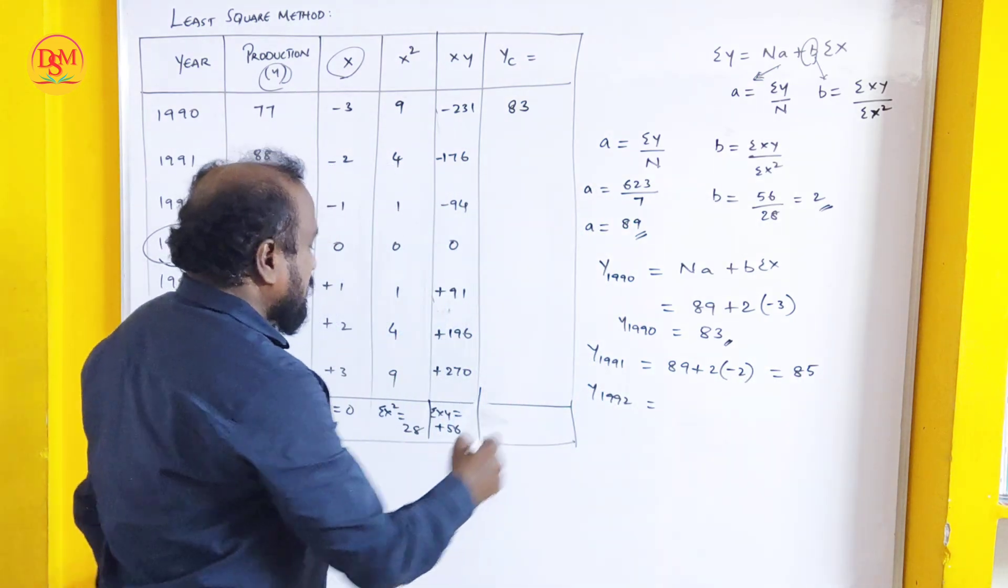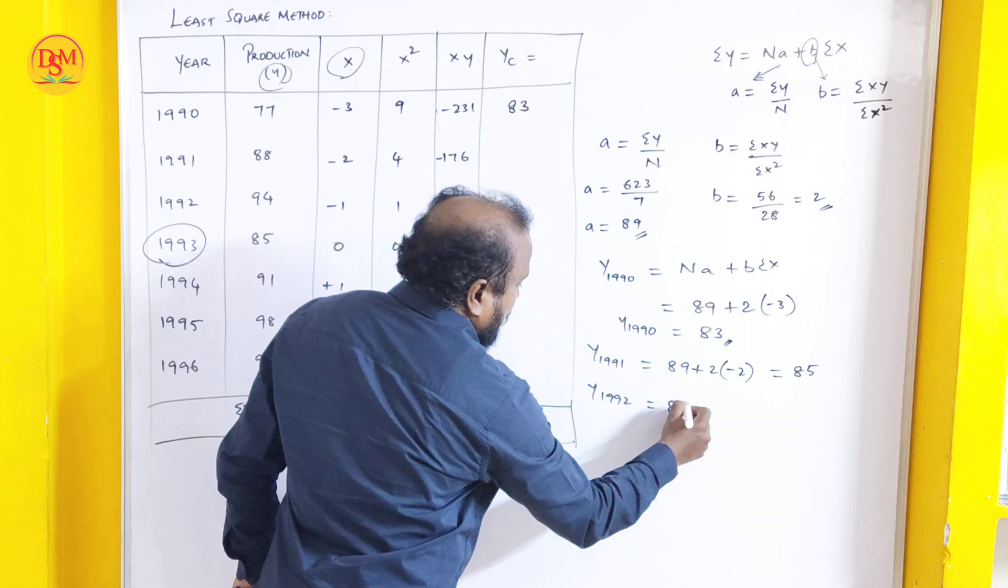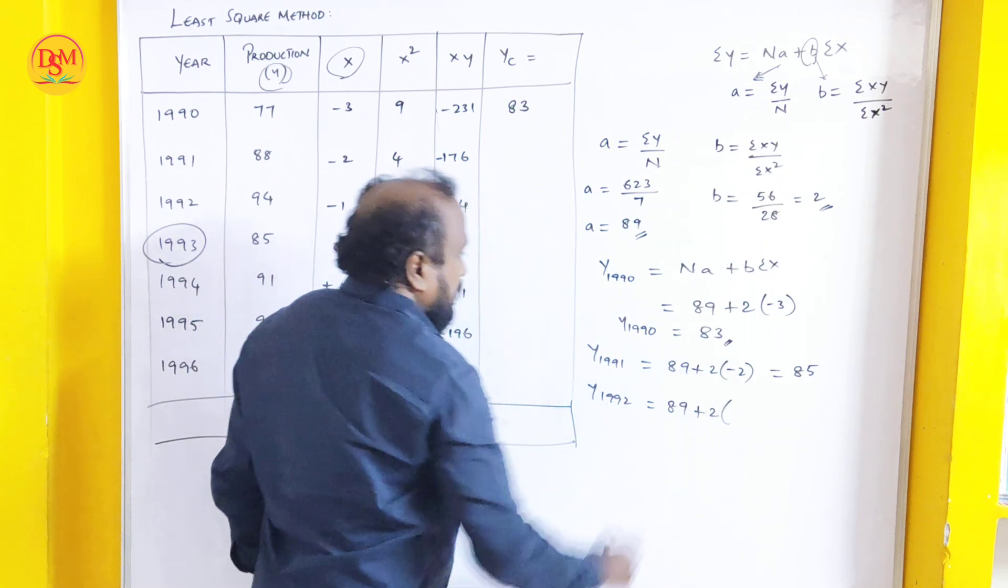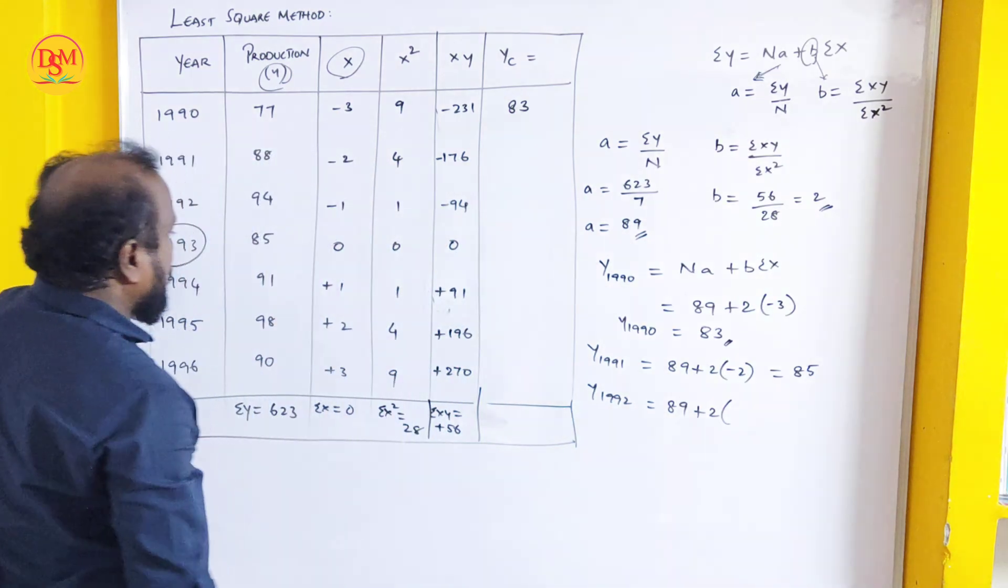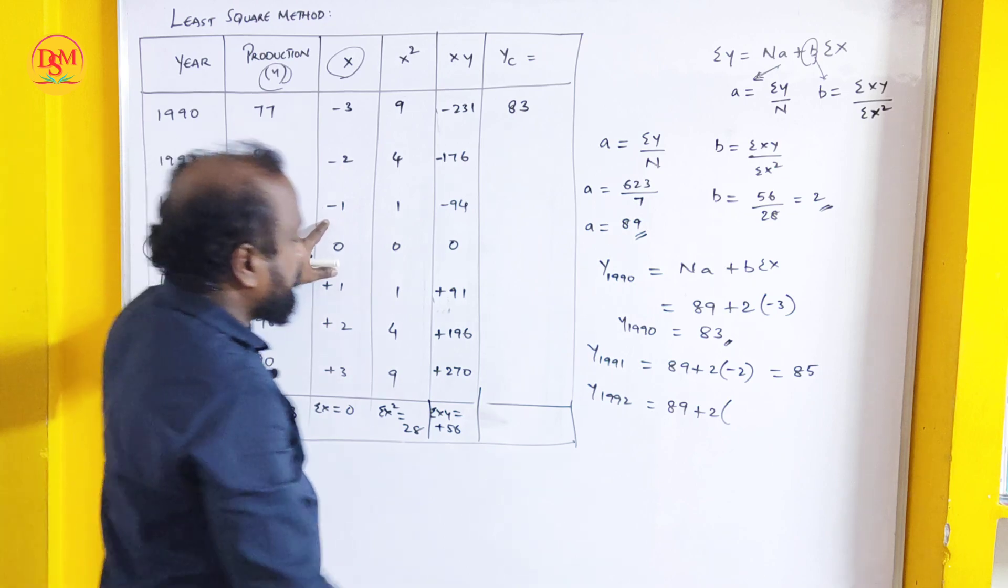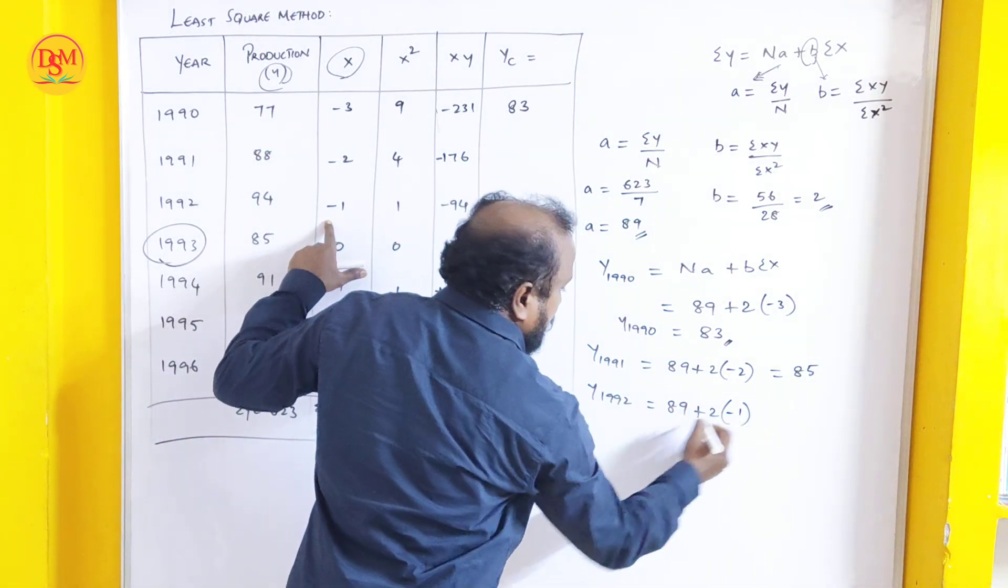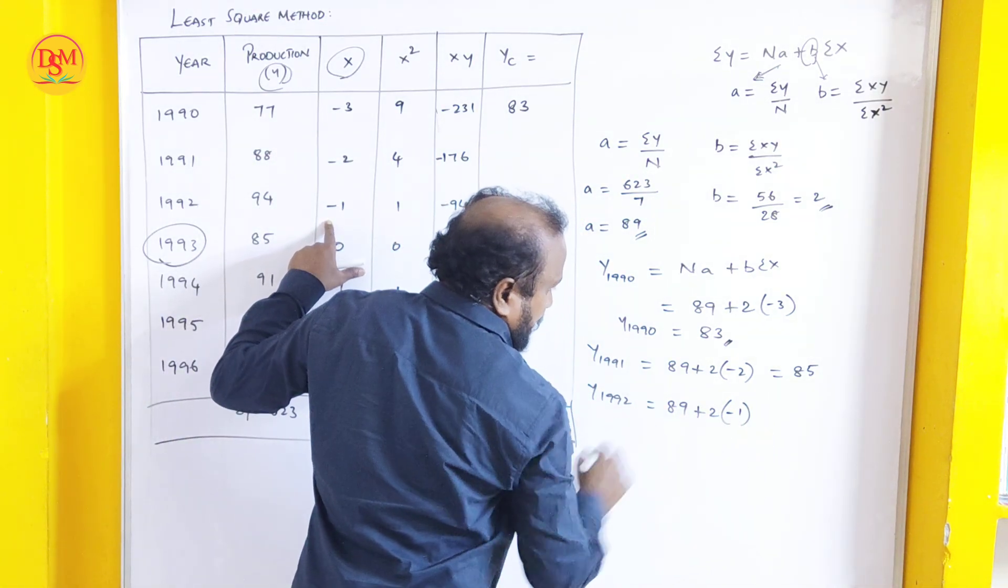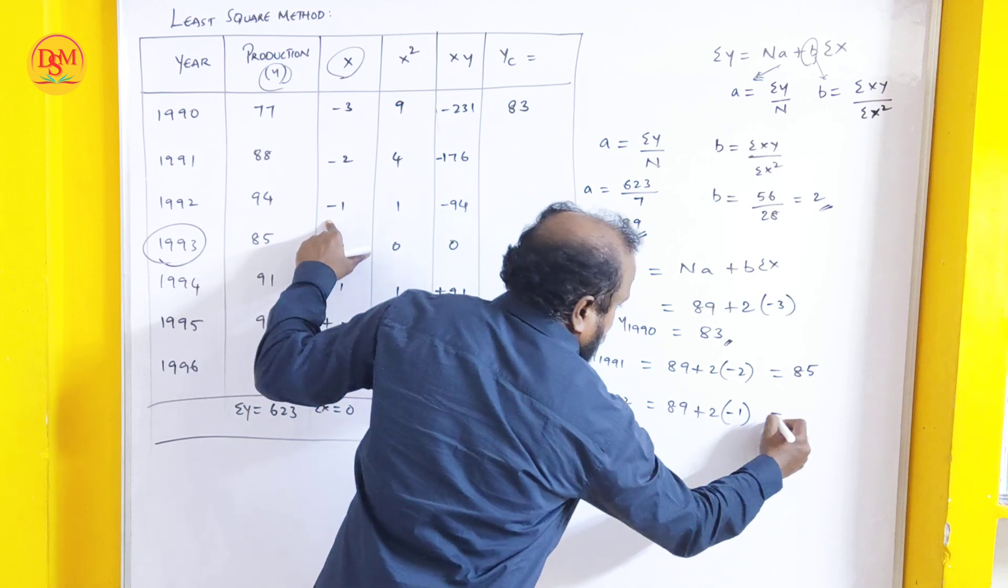1992 value: a value is 89, 89 plus b value is 2. 1992 x value is minus 1. 2 into 1 minus 2. 89 minus 2 is 87.